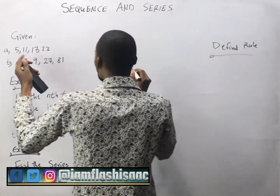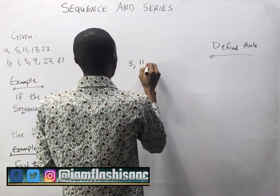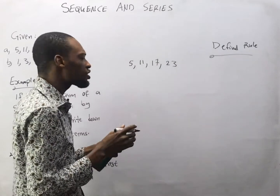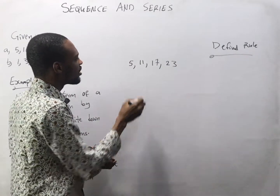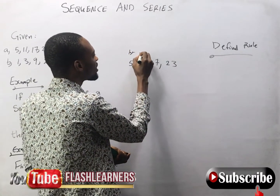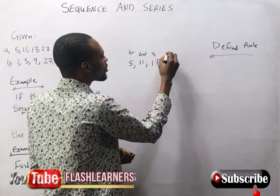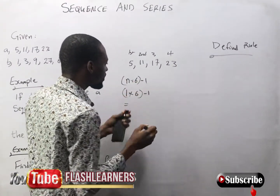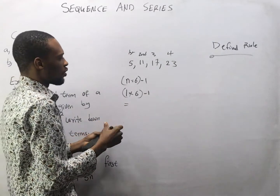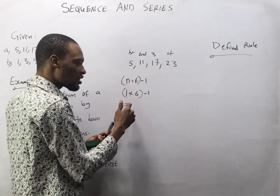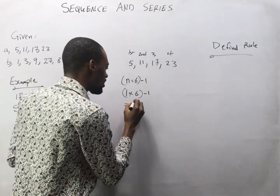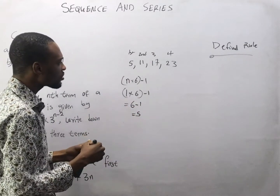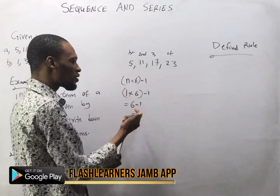Given the sequence 5, 11, 17, and 23 — if this is the first term, the second, the third, and the fourth term — let's use multiplication. 1 times 6 minus 1 equals 5. So we've used this formula to get the first term.